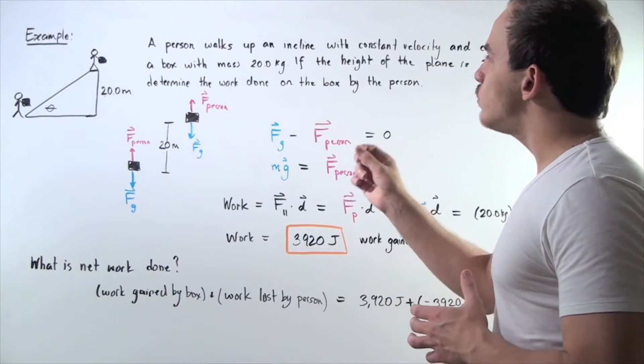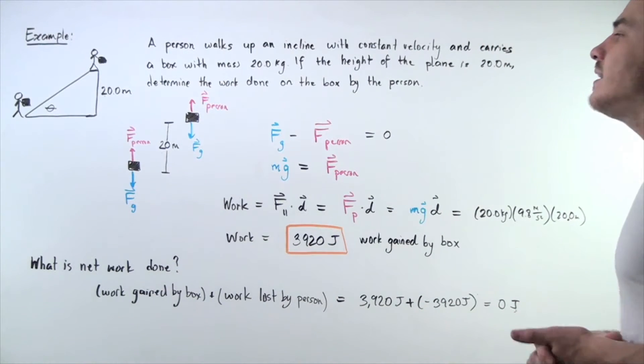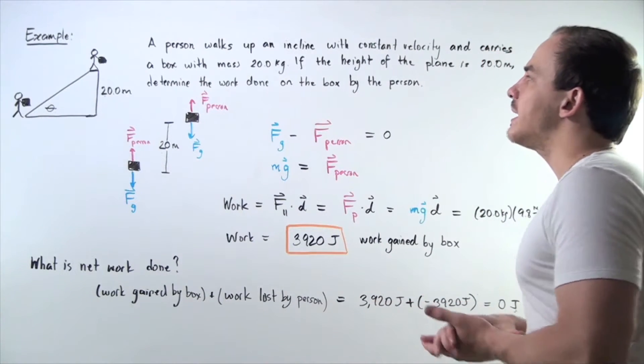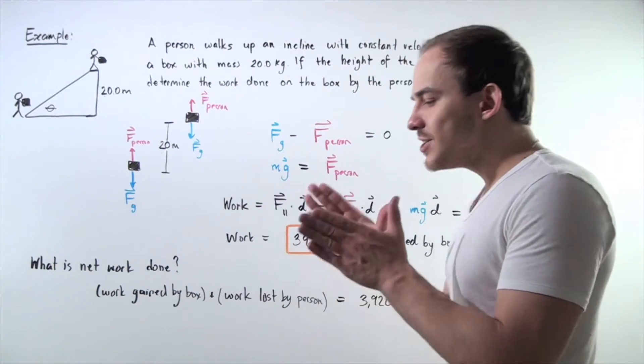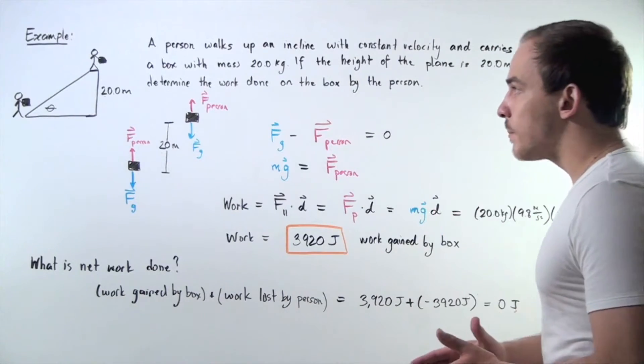We have a person that walks up an inclined plane with a constant velocity and carries a box with a mass of 20 kilograms up the inclined plane. If the height of the inclined plane is 20 meters, determine the work done on the box by the person.